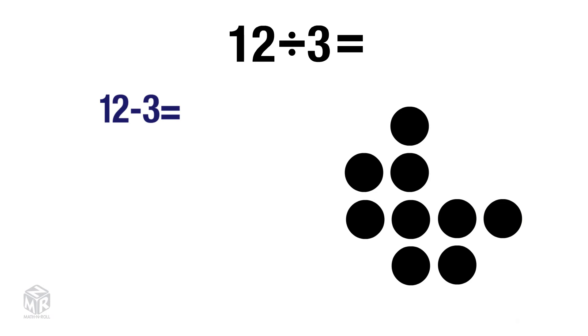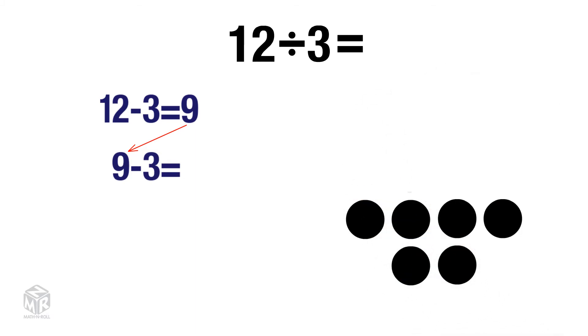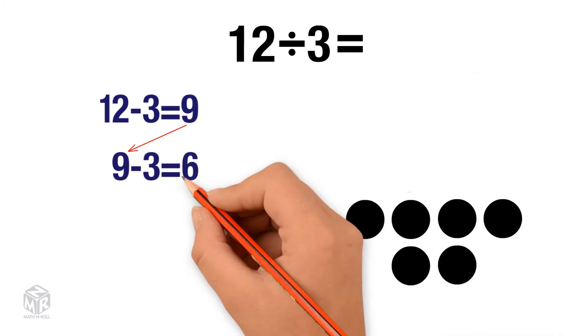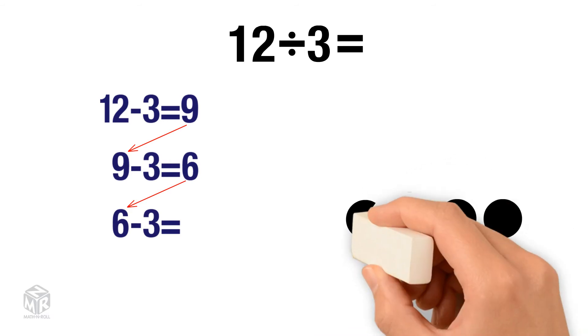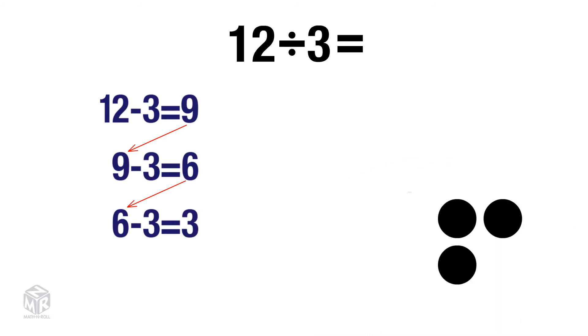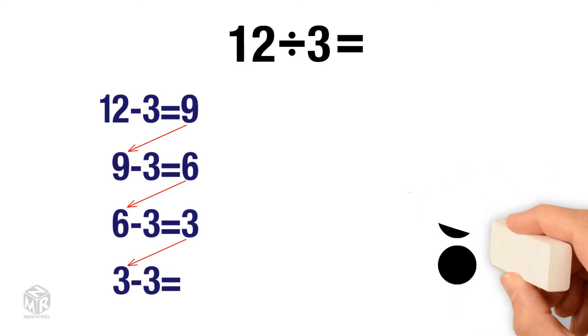So we have 12 minus 3 equals 9. There are more than 3 left, so we subtract 3 again. Subtract over and over again until you reach 0. 3 minus 3 equals 0.